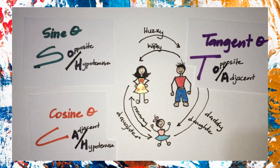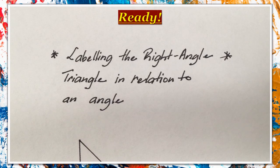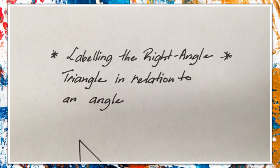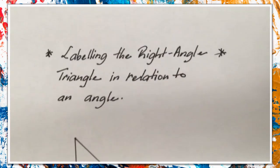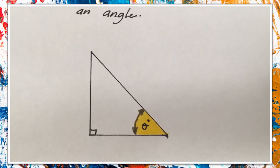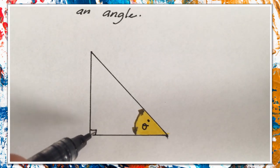We're going to be exploring now how to actually label the sides of a right angle triangle given an angle, or in relation to an angle. We want to look at how to label the right angle triangle in relation to an angle. Here we have a right angle triangle — we know it's right angle because of this little square right here, and here we're given an angle.